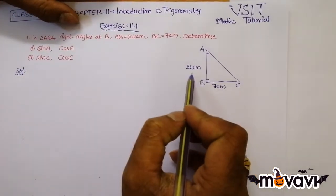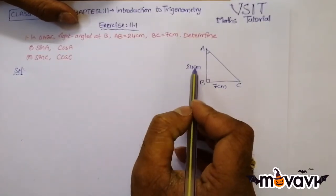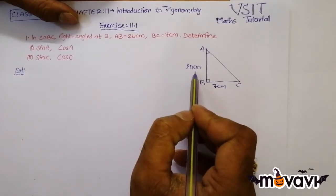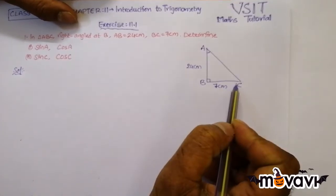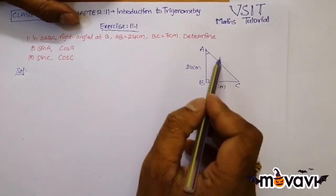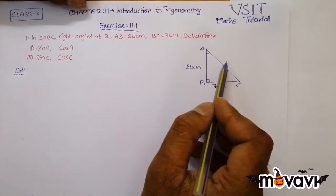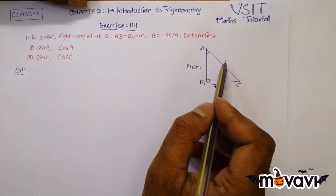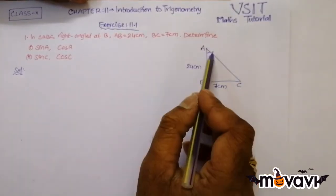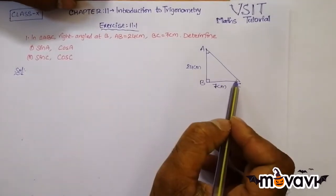We have the value of AB, which is adjacent to angle A. The value of AB is 24 cm and the value of BC, which is opposite to angle A, is 7 cm. The hypotenuse we are not aware of, so first we have to find the value of hypotenuse. We need opposite side and hypotenuse, so let us find the value of AC, that is the hypotenuse.